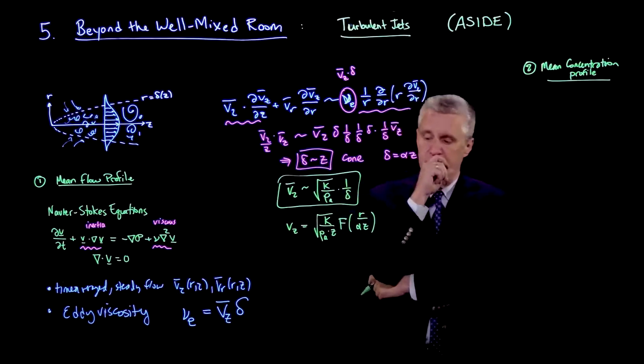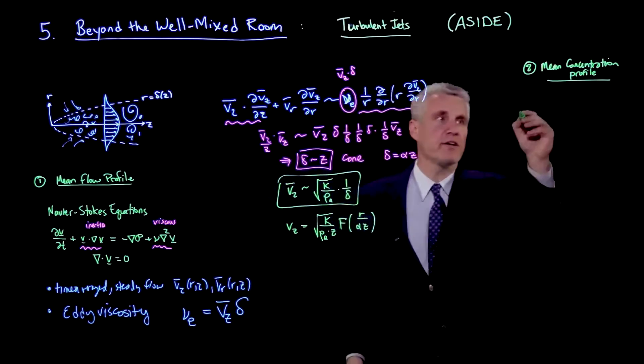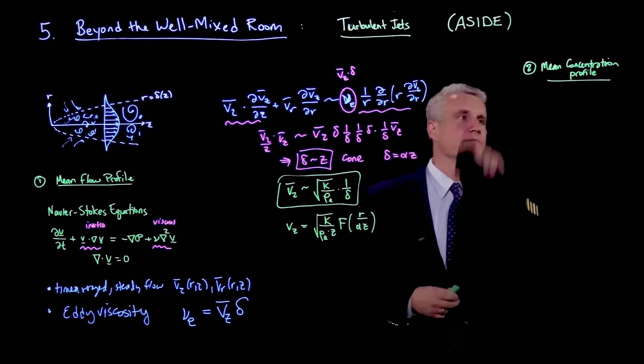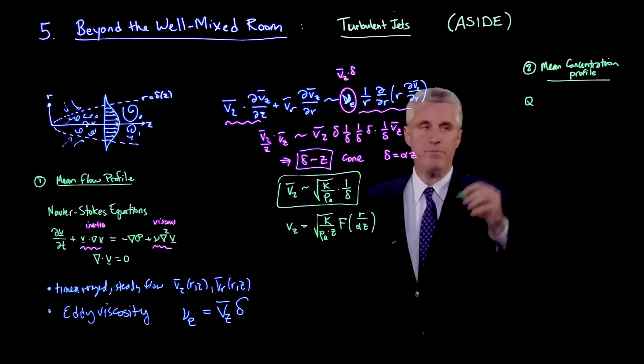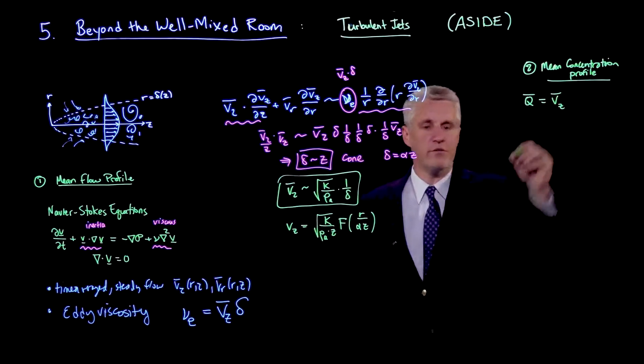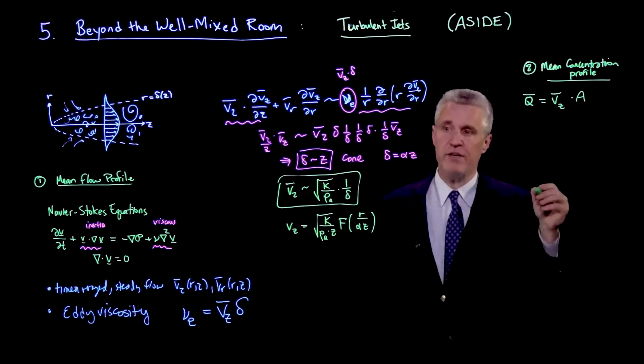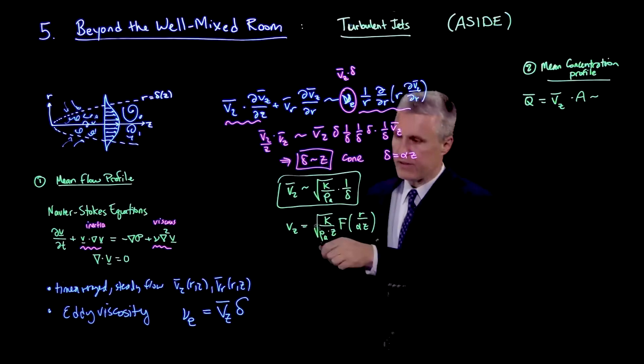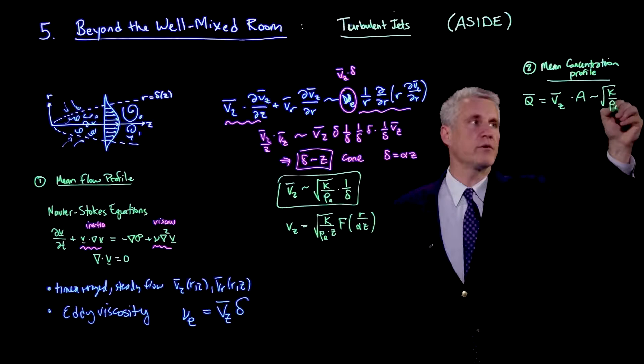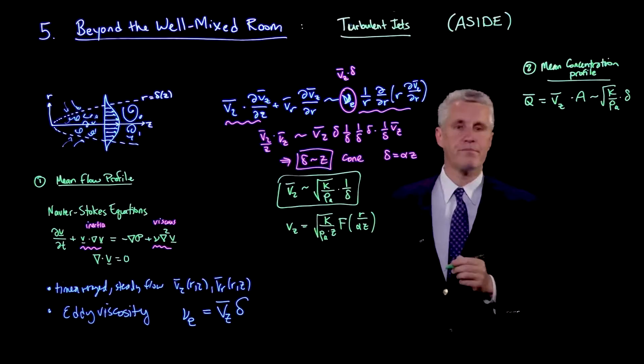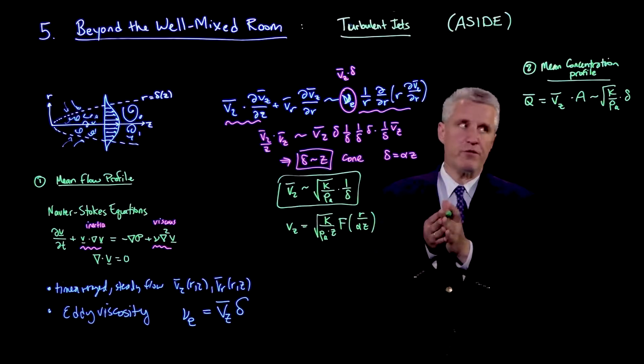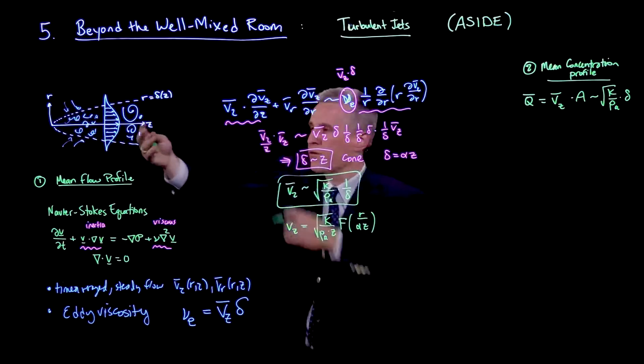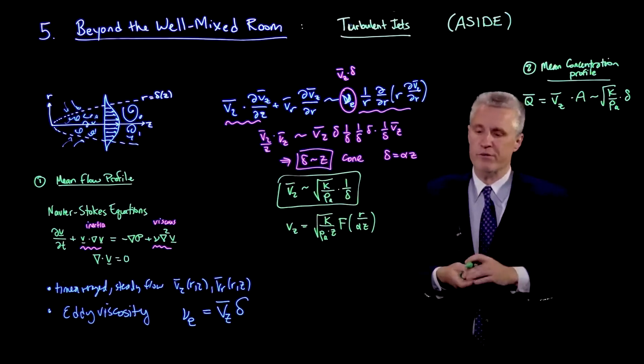So again, we can do some scaling arguments here. So if we ask ourselves, what is the volumetric flow rate through a slice? That is, we'll just call that q. And it'll just be sort of an average. This will be the average velocity times the cross-sectional area at a given position. So this is scaling like, so area scales like delta squared. And then the velocity scales in this way is 1 over delta. So this ends up scaling as k over rho a times just delta. So the volumetric flow rate is increasing with z. And that's a sign that we are actually entraining fluid. As I indicated, this is not just the fluid we're injecting, but it's moving forward. And it's sucking more fluid in. And all that fluid is kind of becoming part of the turbulent jet as it grows.